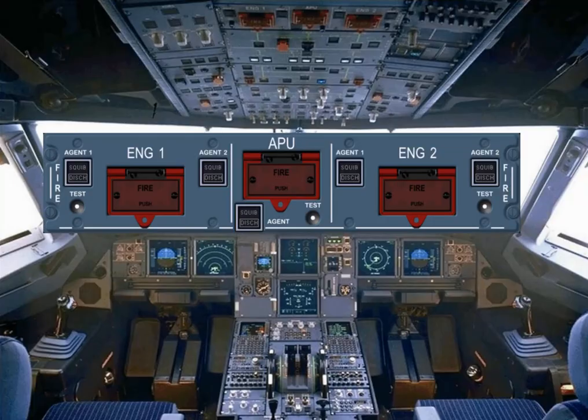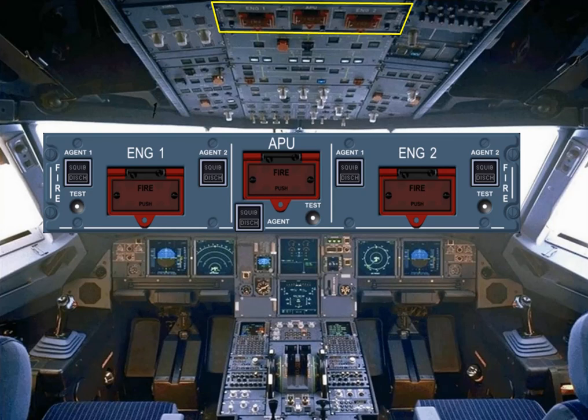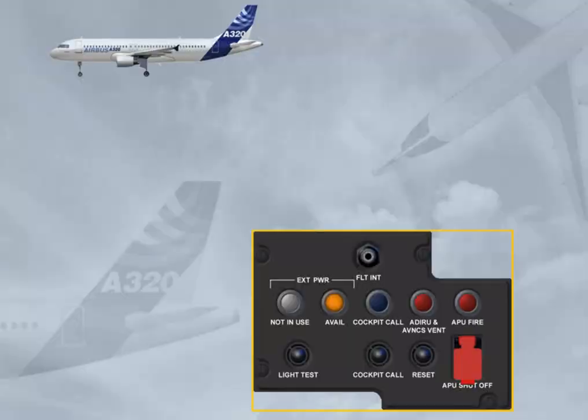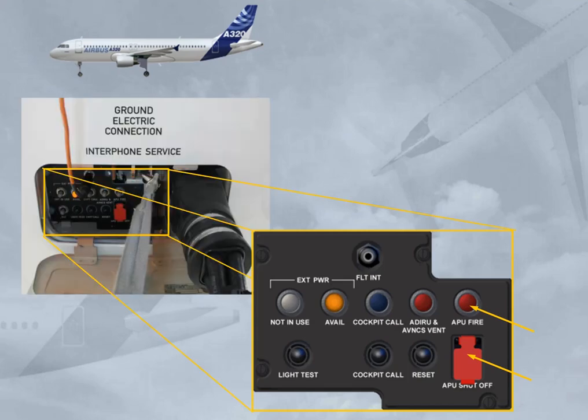APU fire controls are installed on the fire panel. For additional information, refer to the ATA 26 fire protection chapter. There is also an APU shut off push button and an associated APU fire warning light located on the external power panel. This panel is located in front of the nose gear bay.